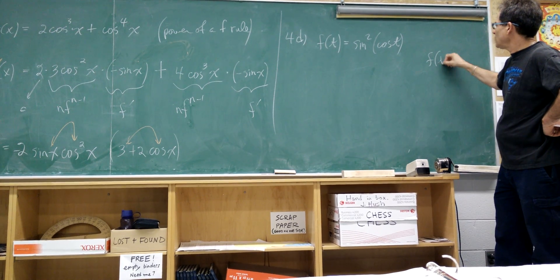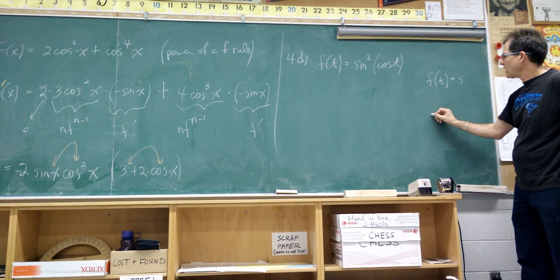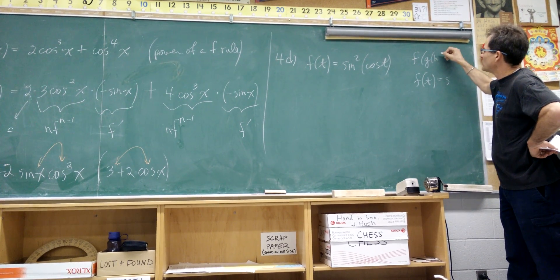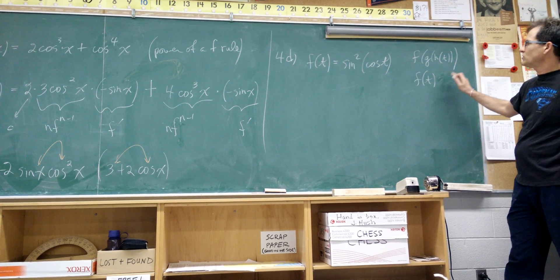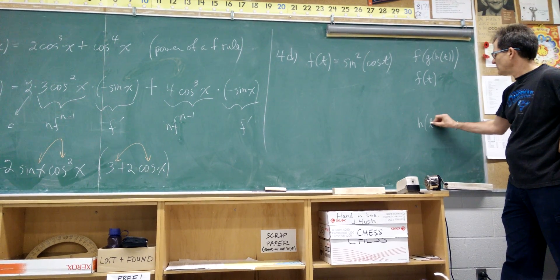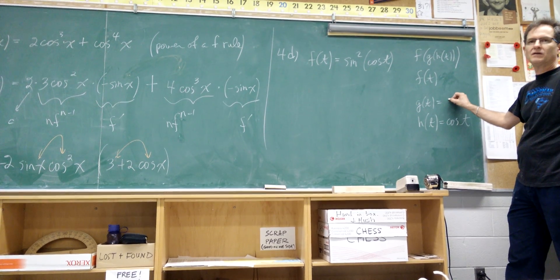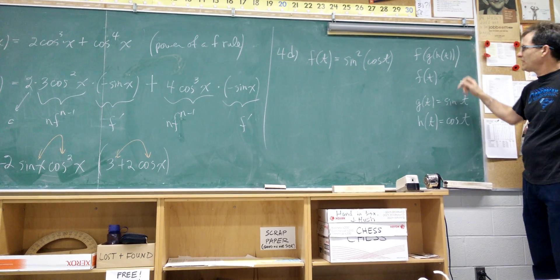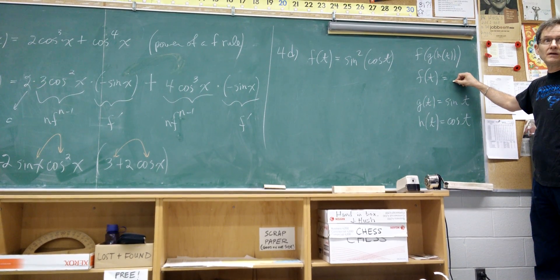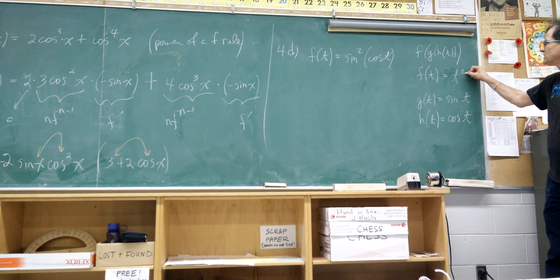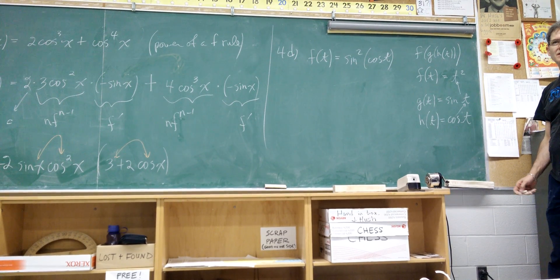This is actually a triple composite function. If I work backwards, this is going to be f of g of h of t. We're going to do it one step at a time. The innermost function h of t is cos t. You could think of that as being plugged into g of t, which is sine t. And then that is plugged into f of t, which is t squared.